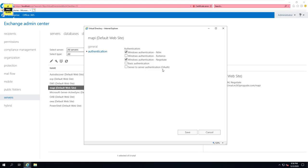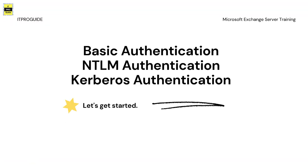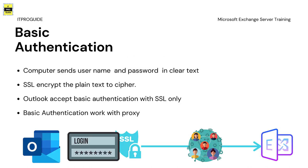We also have server-to-server authentication, which is modern authentication. First, let us understand what all these authentication types are, their advantages, and the requirements to configure this authentication for MAPI over HTTP or RPC over HTTP. Then we will move to the configuration demo. Let us begin with basic authentication.